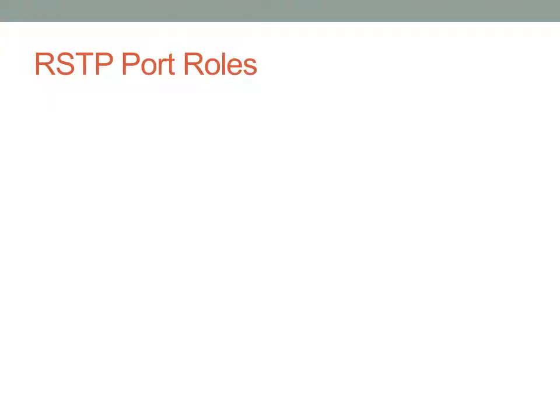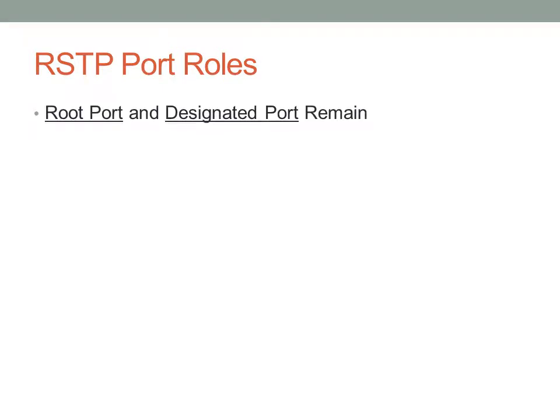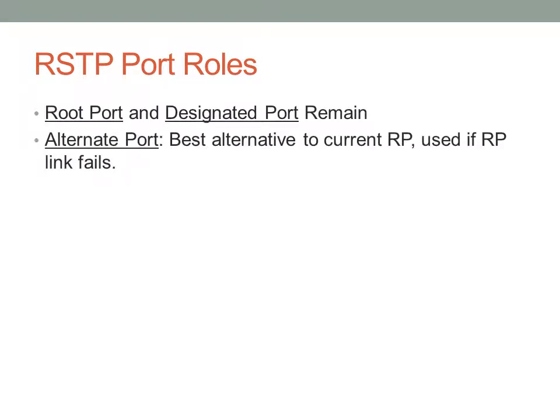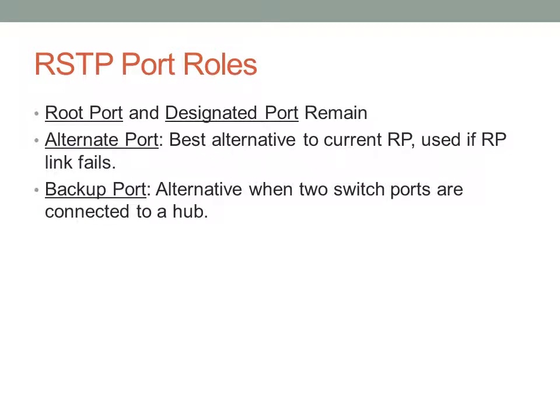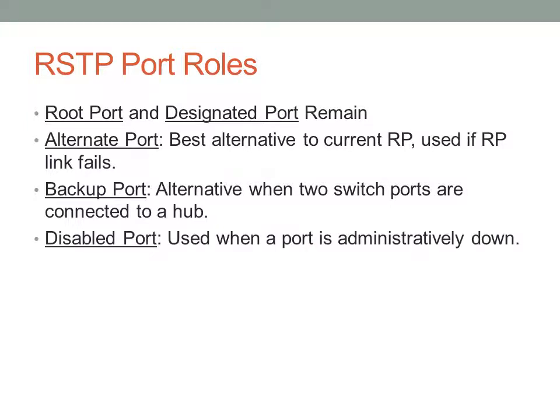The port roles in Rapid SpanningTree are similar to regular SpanningTree — we still have root port and designated port. We also have an alternate port, selected as the second-best lowest cost to root, which allows immediate failover if the root port link fails. There's also a backup port, used on a LAN segment if the designated port goes down, and a disabled port, which is basically the equivalent of a blocked port in regular SpanningTree.